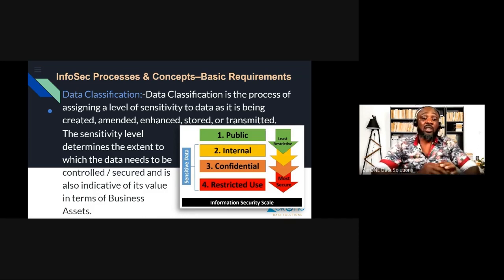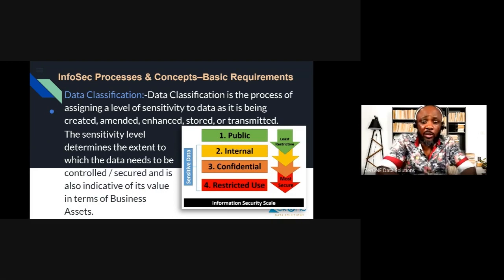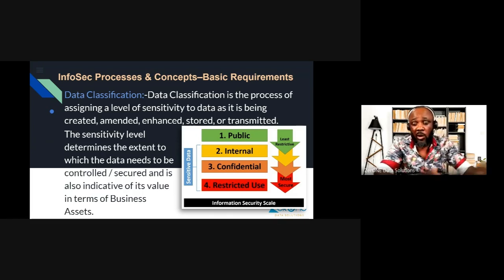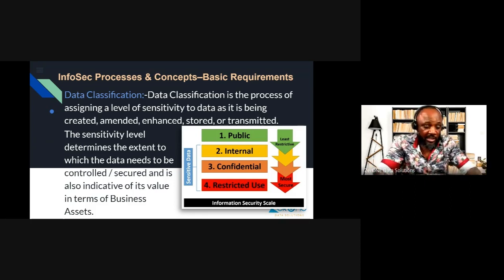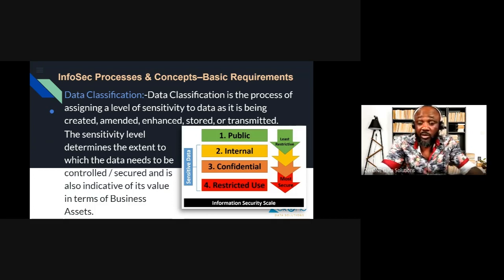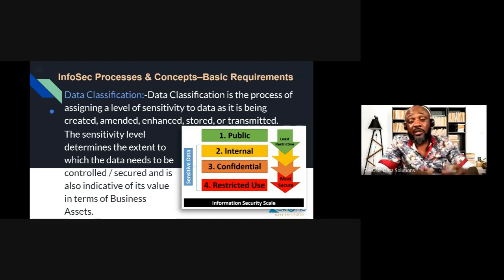In the public sector, there are different data classifications. Between one and four we have: the first is Public data. Public data is a type of data that you can share with anybody — like yearly records and quarterly reports that you put out for everybody to see how the company is doing. If anything happens to that data it doesn't mean anything to you because it's public information.